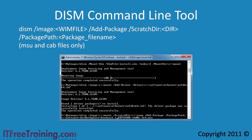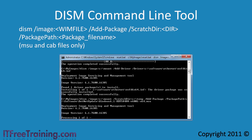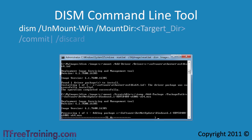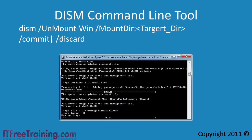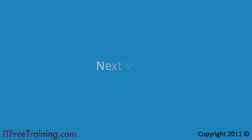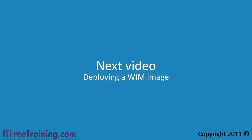All I need to do now is cursor back and remove the extra space and run the command. The Windows update will now be added to the file. The last step I need to do is unmount the image. I can do this with the unmount-WIM switch. Next I need to specify the mount directory with the mount-dir switch. The last option I need to add is the commit switch or discard switch. I will commit the changes and they will be saved. If I use the discard switch the changes would be lost and the WIM would be left unchanged. Now that you know how to capture a WIM file and perform maintenance on it, in the next video I will look at deploying a WIM image to a computer.